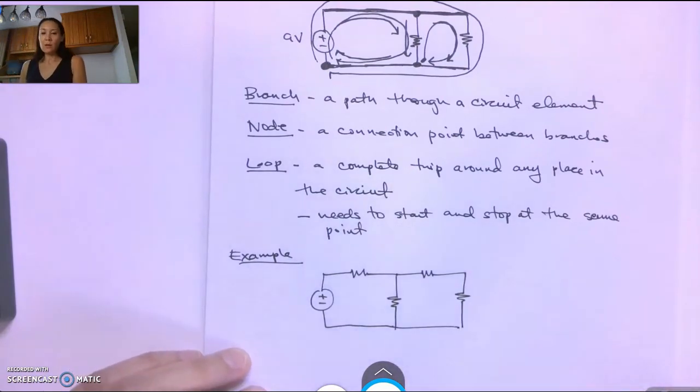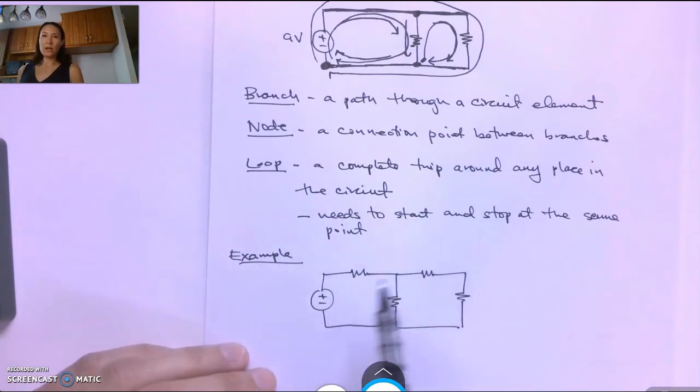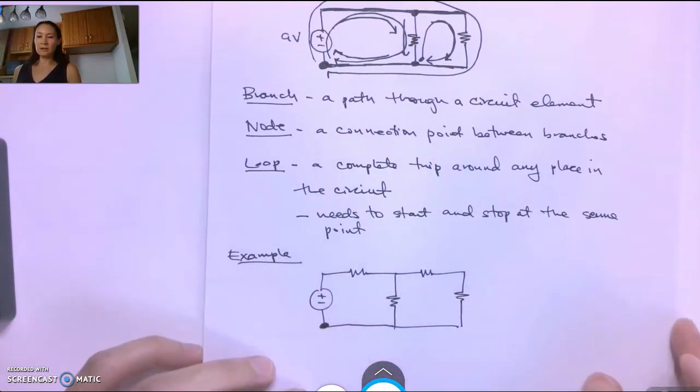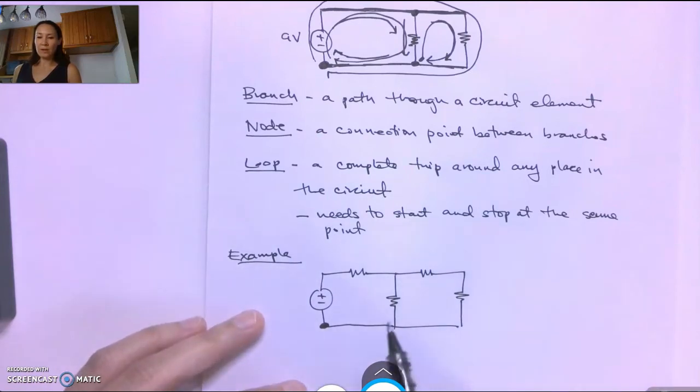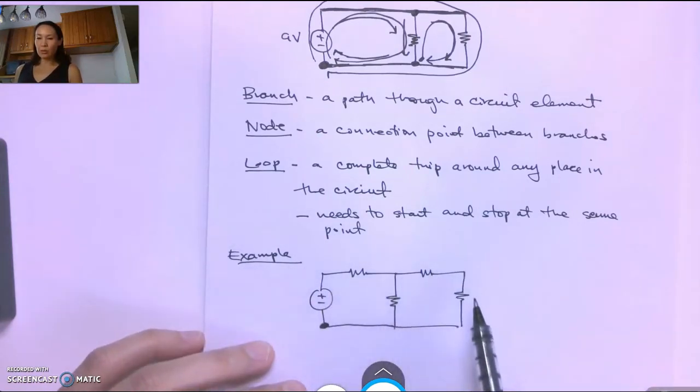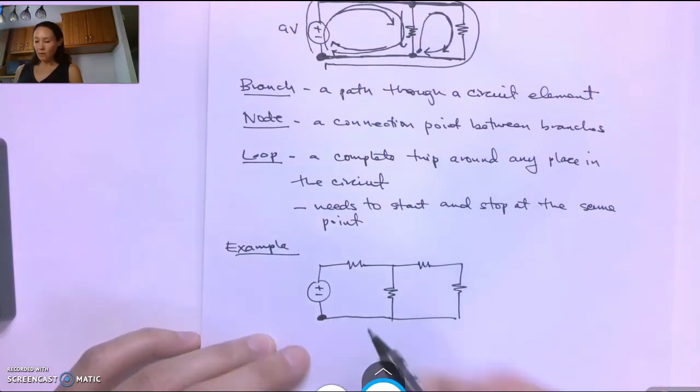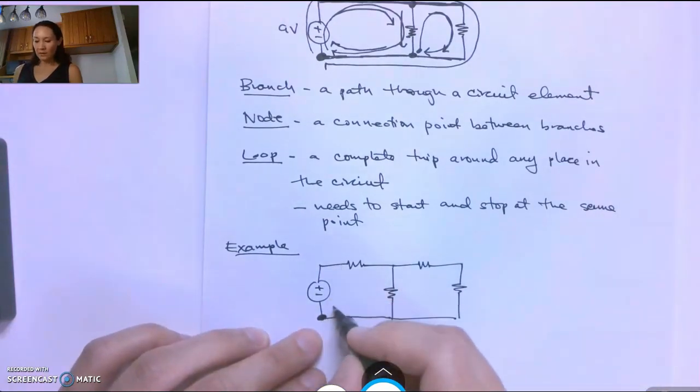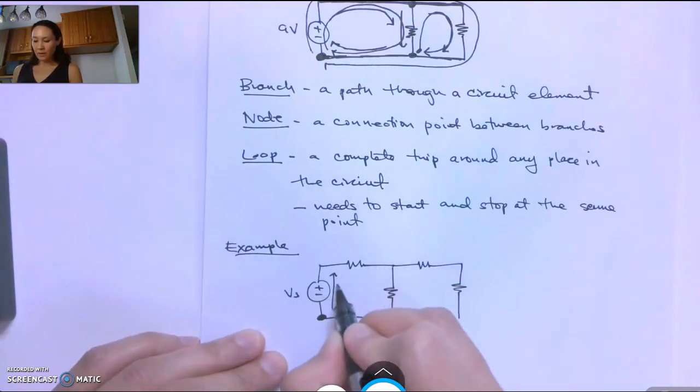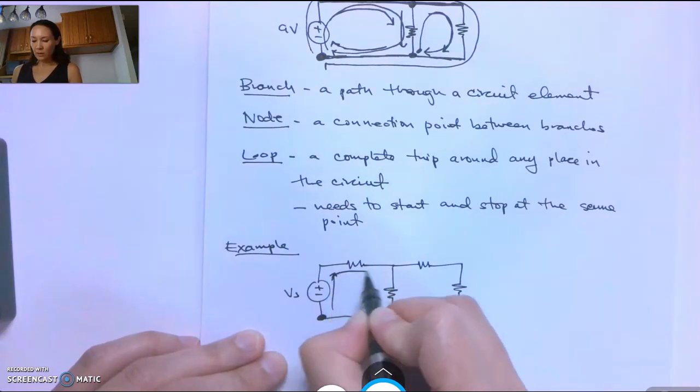Okay so if we were asked to imagine that we are current walking around a loop and we start from the bottom left hand corner, and you can really start anywhere. I tend to start there consistently just because that's what I'm used to doing. If we went around this outer loop what are all of the circuit components that we would encounter? Well if we start here and we go up in this direction, first we're going to encounter this V source. And then we're going to continue on this loop.